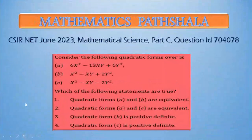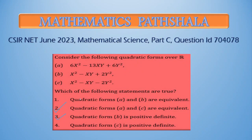So to summarize: option 2 is true (quadratic forms A and C are equivalent) and option 3 is true (quadratic form B is positive definite). Options 1 and 4 are false. Hope you all like this video. Please subscribe to our channel and support us. Bye!